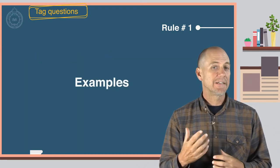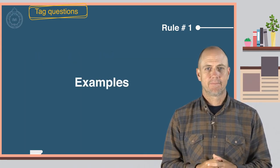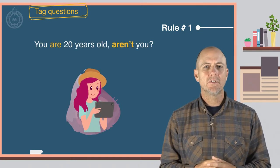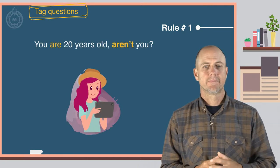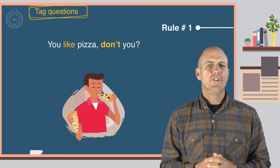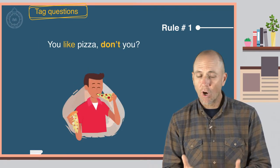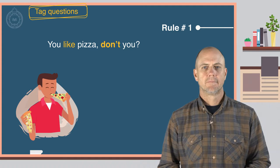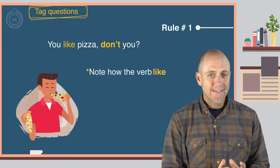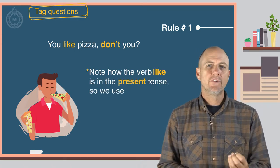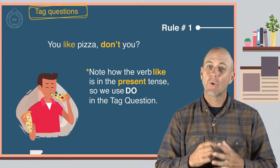Here are some examples. You are twenty years old, aren't you? You like pizza, don't you? Note how the verb like is in the present tense, so we use do in the tag question.